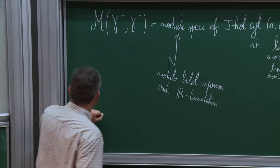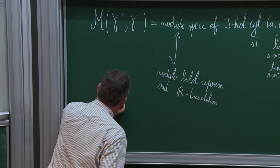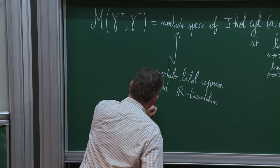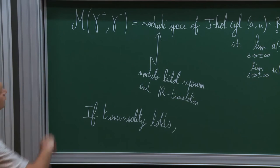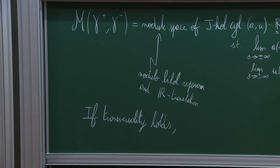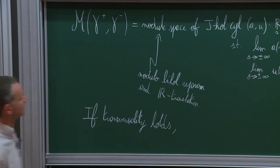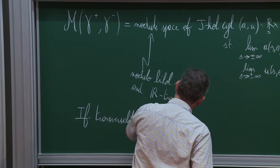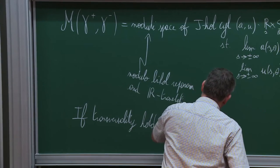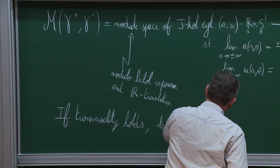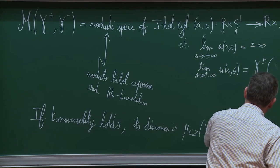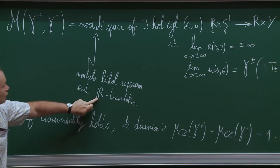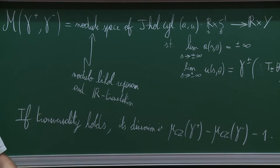Now a big if: if transversality holds for the elements of this moduli space, then we know that the dimension of this moduli space will be given by the Fredholm index of this elliptic problem. Its dimension is then given by the difference of the Conley-Zehnder indices of the asymptotes minus one, that one coming from the quotient by the ℝ-translation—you lose one degree of freedom that way.